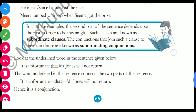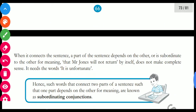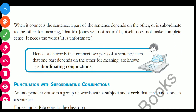Now look at the underlined words in the sentences given below. The word underlined here is joining two parts of sentences, so it stands for a conjunction. When it connects a sentence, one part depends on the other or is subordinate to the other for meaning. Such words that connect two parts of sentences such that one part depends on the other for meaning are known as subordinating conjunctions.